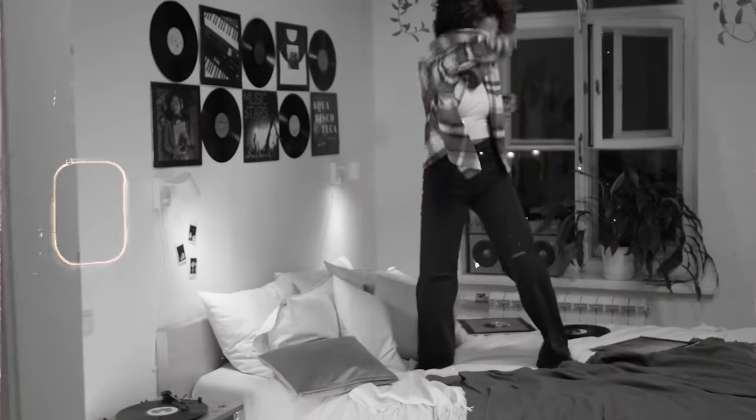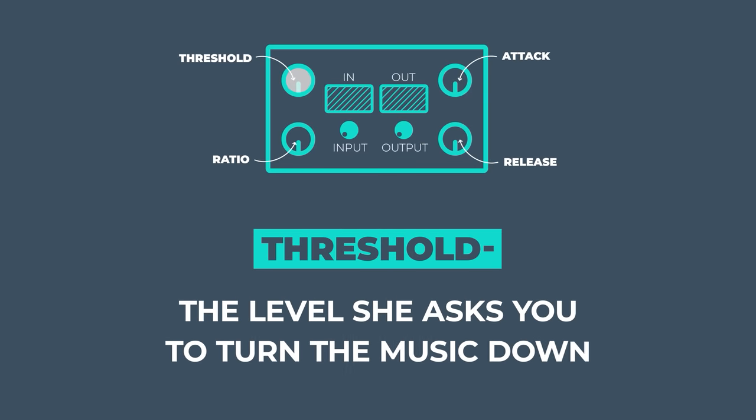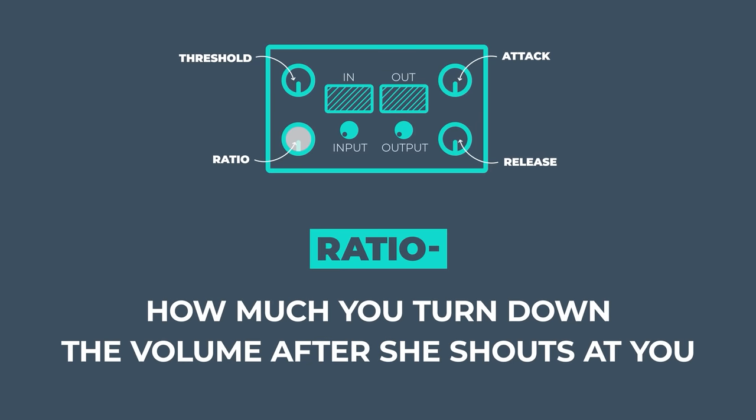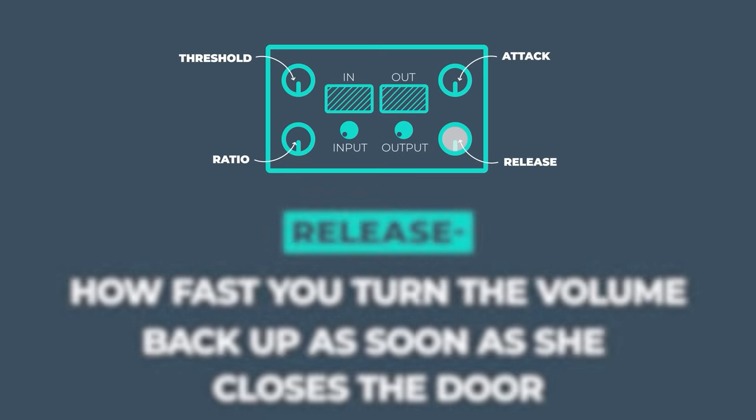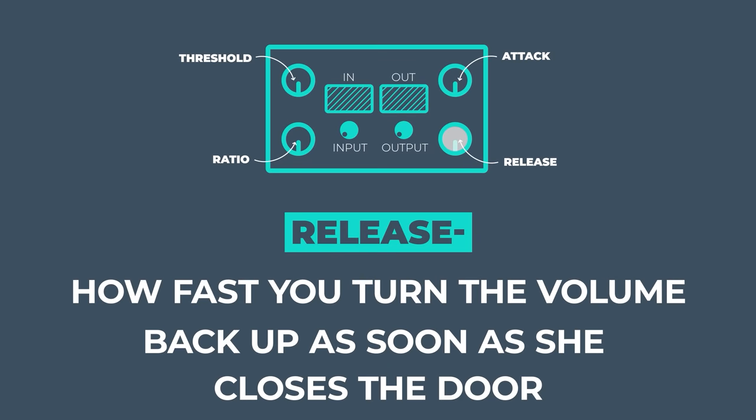The best analogy to understand these controls is to think of a compressor like your mum. If you're listening to music up in your room as a teenager, the threshold is the level at which your music's playing when your mum shouts upstairs to turn it down. The ratio is the amount by which you turn it down, the attack is how quickly you turn it down, and the release is how quickly you turn it back up again when she's gone.